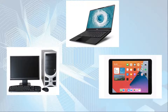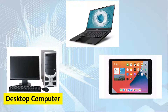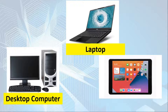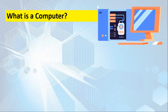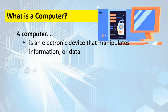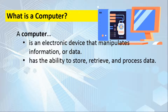Looking at three pictures, can you identify the types of computers shown? The first is the desktop computer, the second is called a laptop, and the third is called a tablet. So, what is a computer? It is an electronic device that manipulates information or data. It has the ability to store, to retrieve, and to process data.